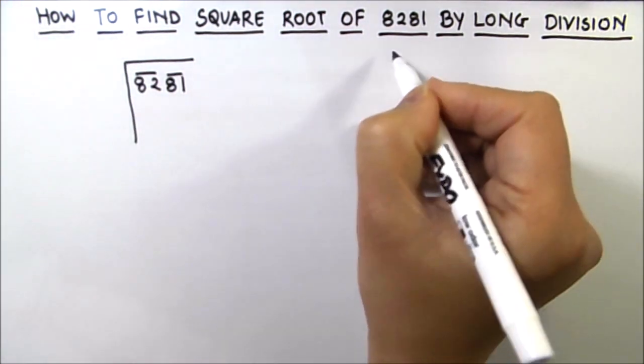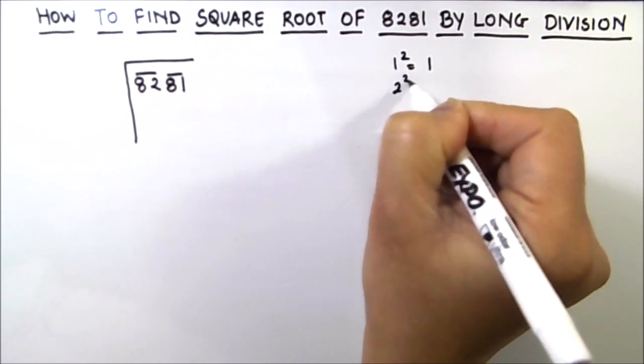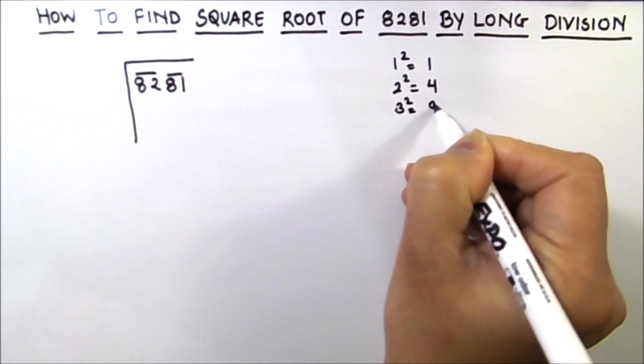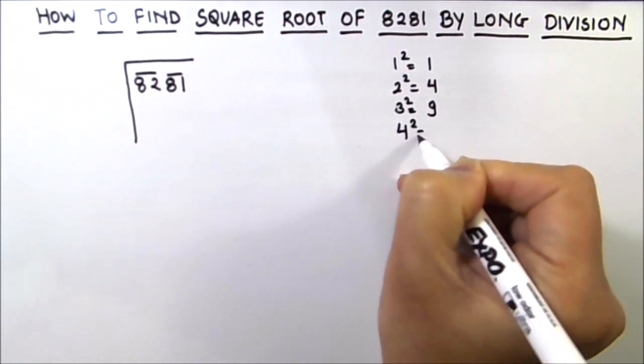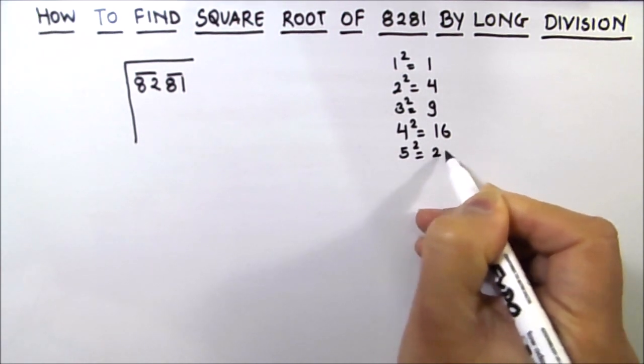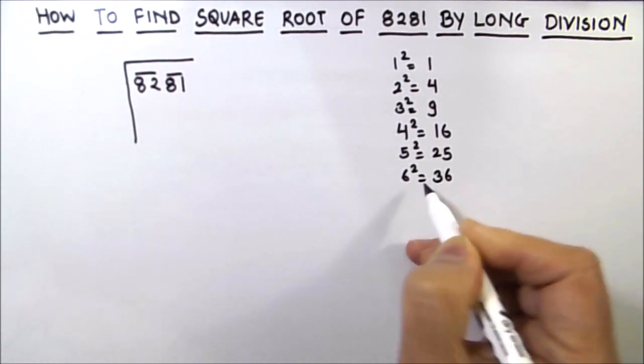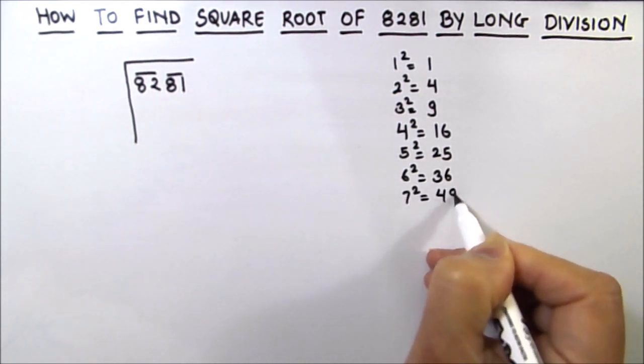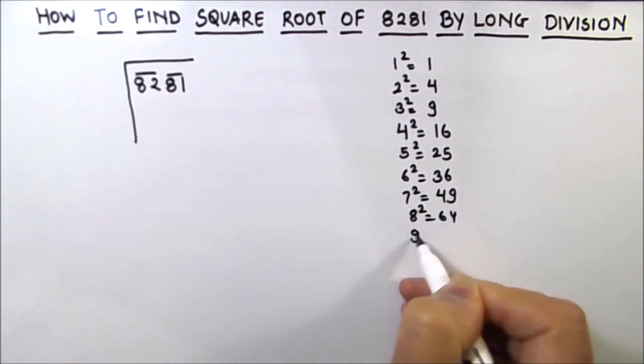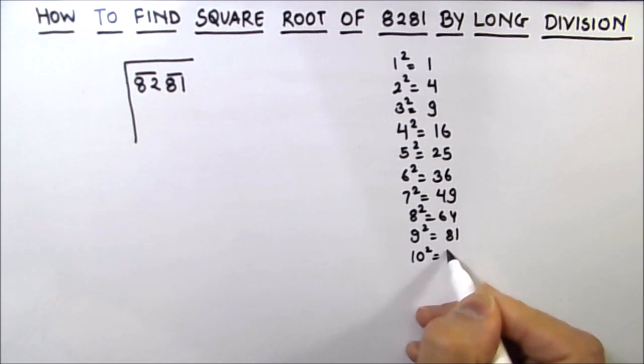So let's write the square numbers here. We know that 1² is 1, 2² is 4, 3² is 9, 4² is 16, 5² is 25, 6² is 36, 7² is 49, 8² is 64, 9² is 81, and 10² is 100.